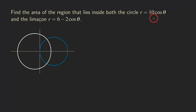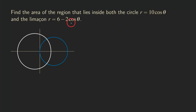Let's plug in θ equals zero, which is starting from the positive x-axis. If θ is equal to zero, cosine of zero is one, so one times ten gives us ten. And then the other one: when we plug in zero, we get six minus two, which gives us four. Which one is larger? Ten is larger and four is smaller, so we know that this would be the circle and the other curve would be the limaçon.